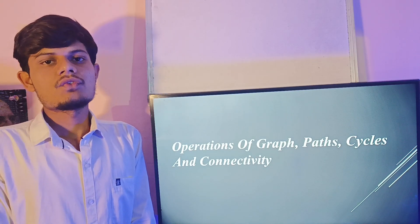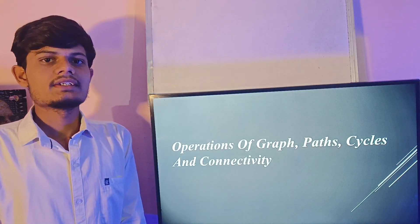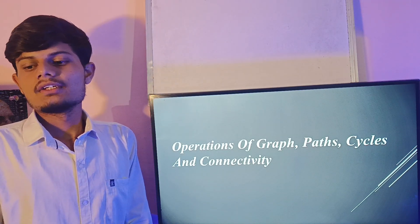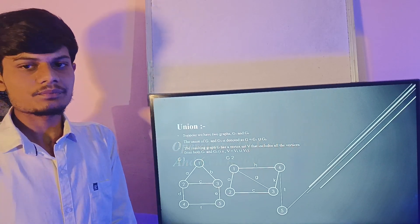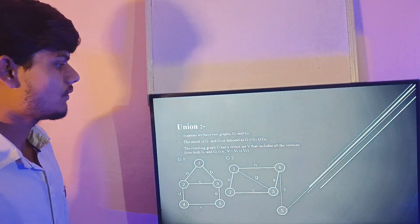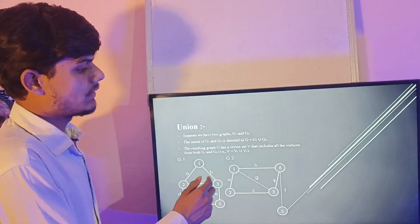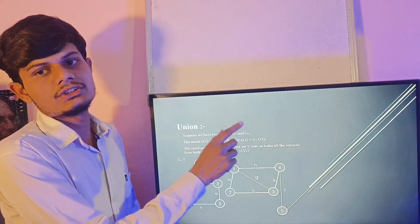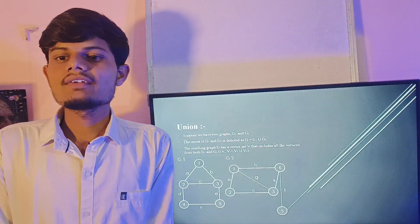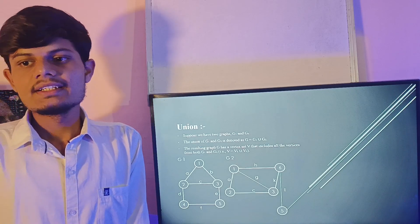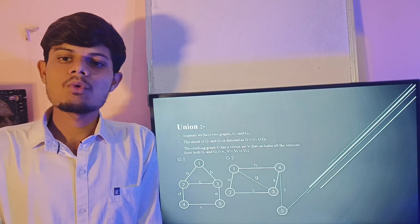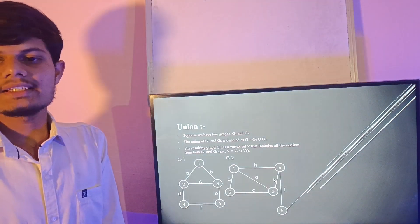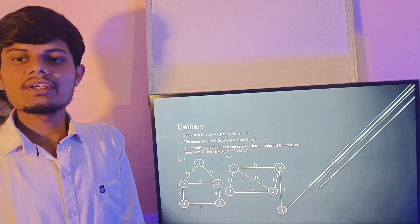There are four main basic types of operation: union, intersection, ring sum and complement. First of all we discuss union. The union of graph G1 and G2 is denoted by G equal to G1 union G2. The resulting graph G has vertex set V that includes all the vertices from both G1 and G2, that is V equals V1 union V2.